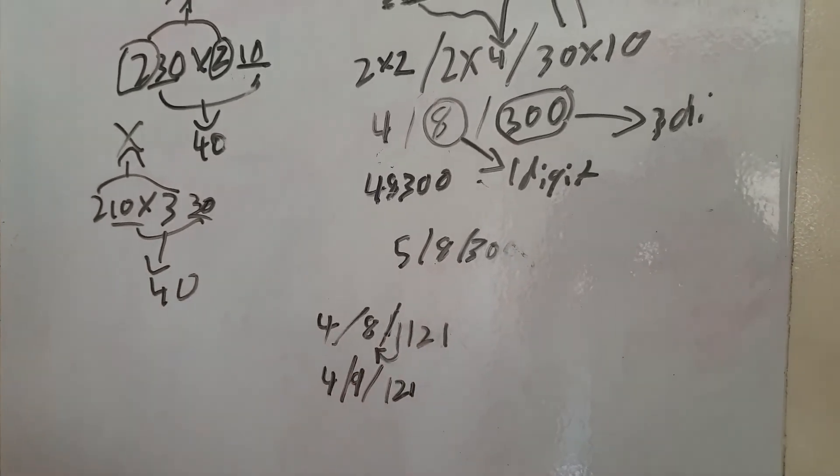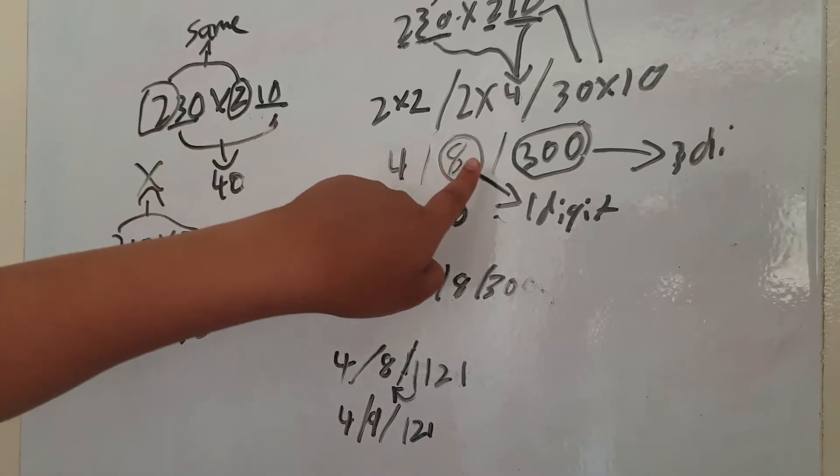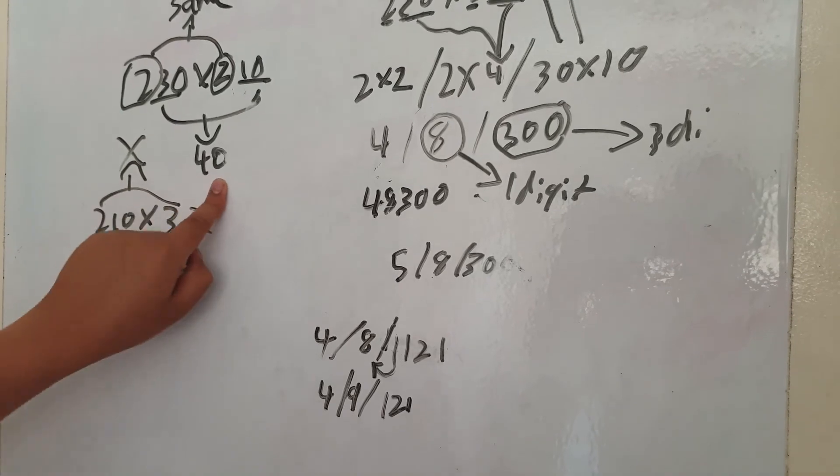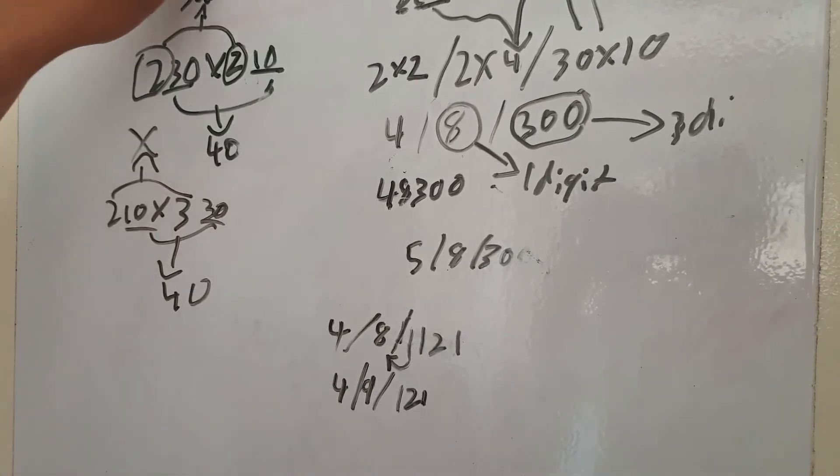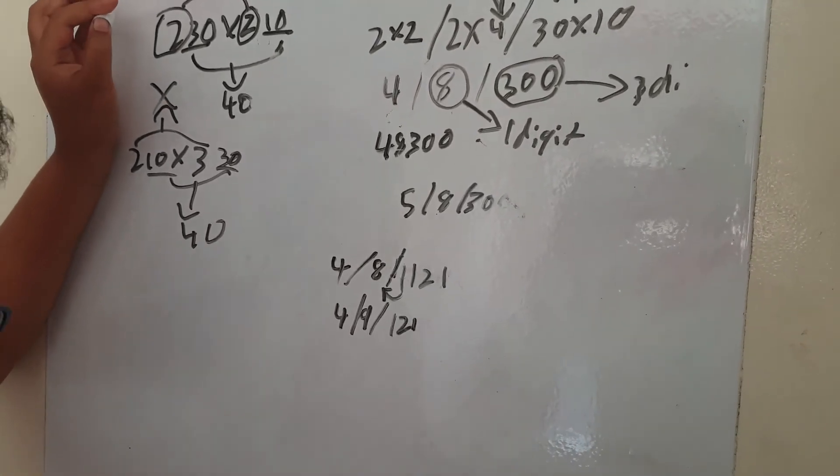And it's the same thing for, so this was adding up to 40 right here, but the same thing applies to 20, 30, 40, 50, 60, 70, 80, and 90.